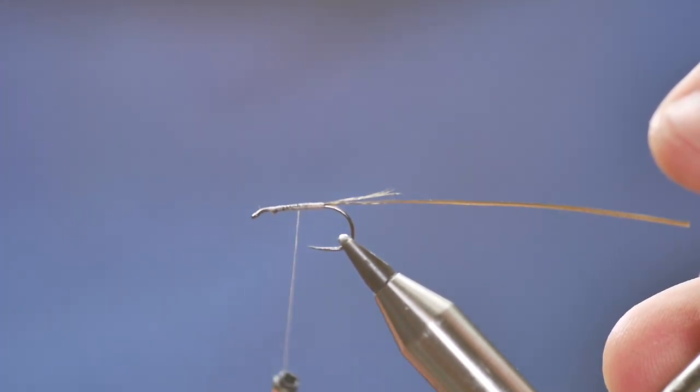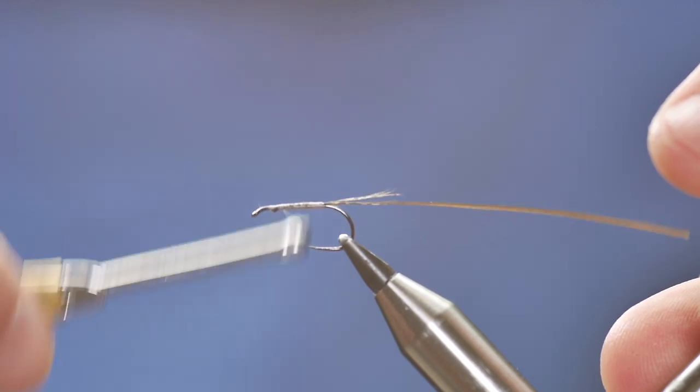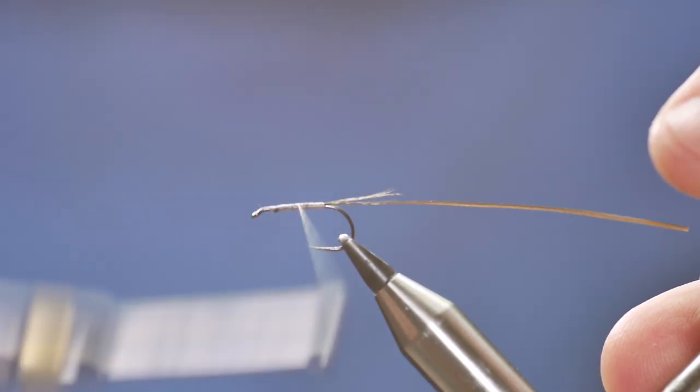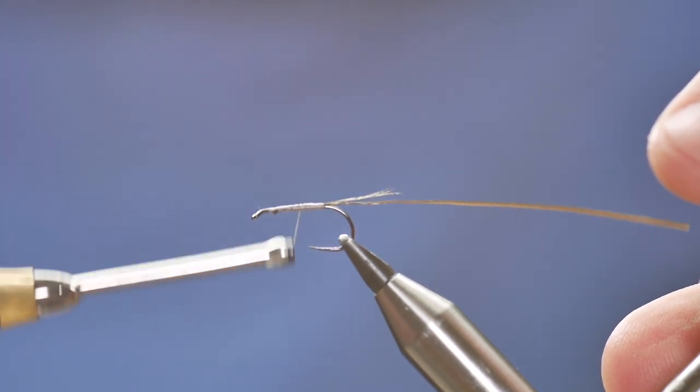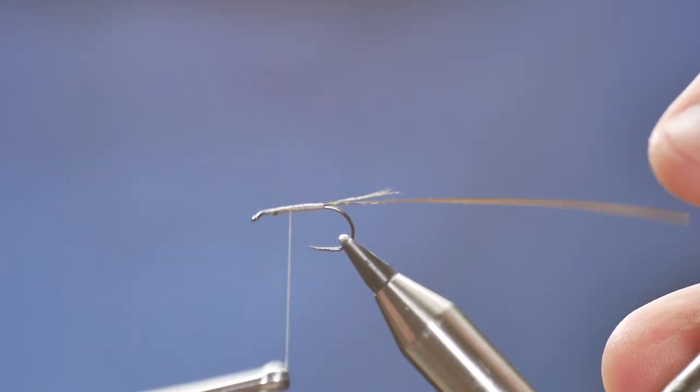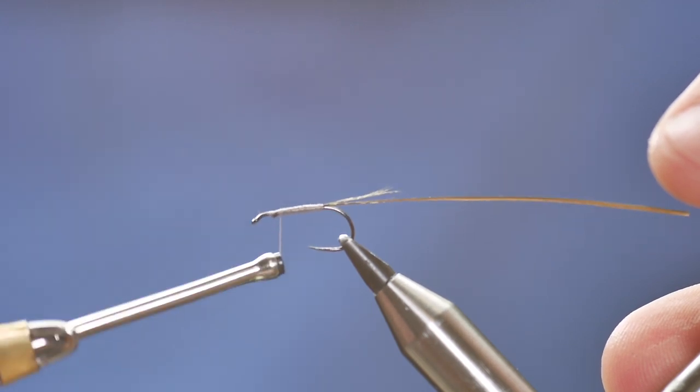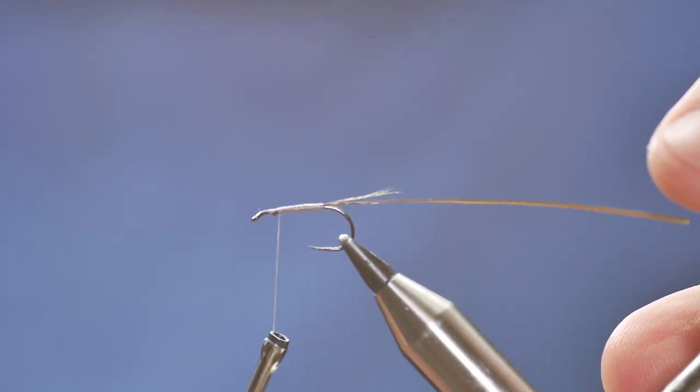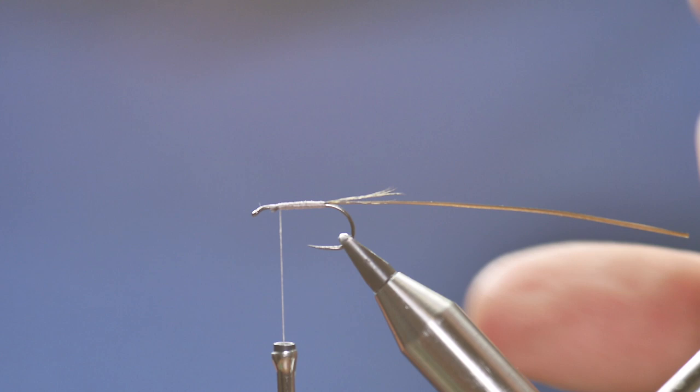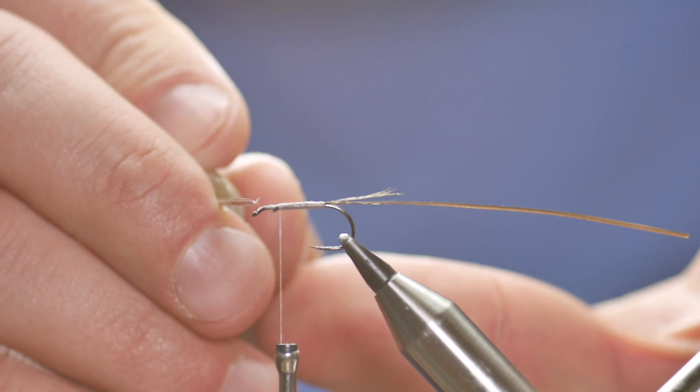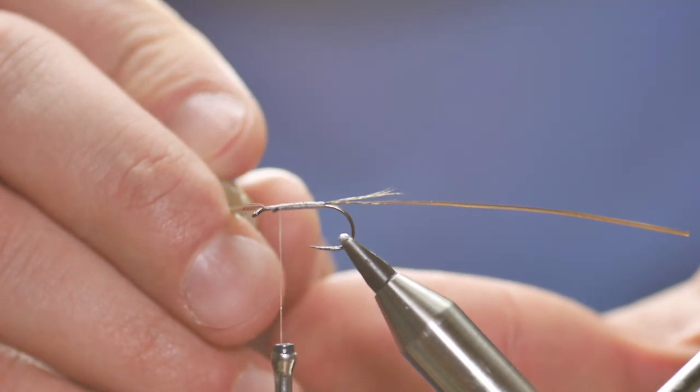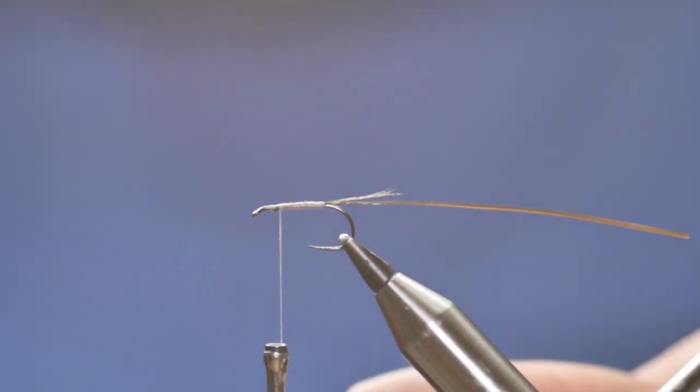Then I can come all the way back up the shank, and what I'm going to do is just build the slightest of tapers. I've got my rib ready to come up and you might note that I've stopped my thread about two-eighths of an inch from the eye of the hook.